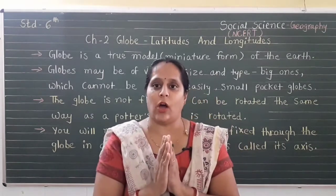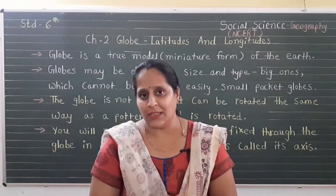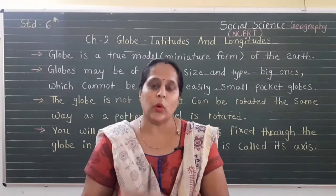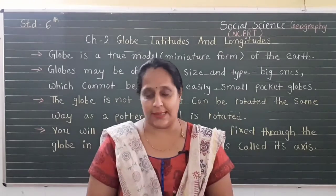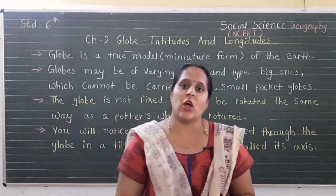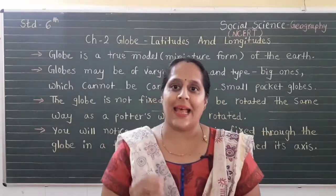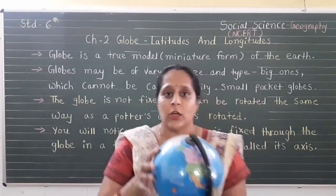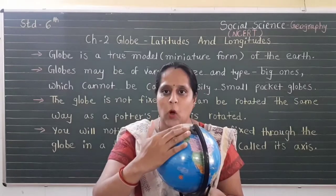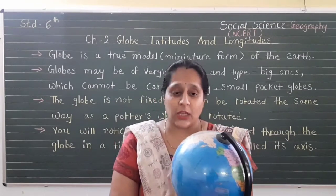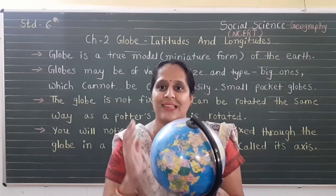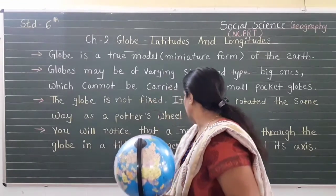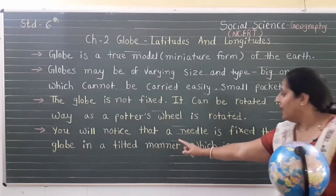As you know, about 70 to 71 percent of water is covered on earth and around 29 percent is land. There are seven continents and five oceans. Two points on the globe through which the needle passes are the two poles — the north pole and the south pole. The globe is rotated from west to east. The globe can be moved around on the needle, which is fixed through the globe in a tilted, slanting position.